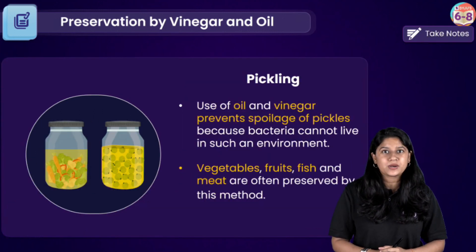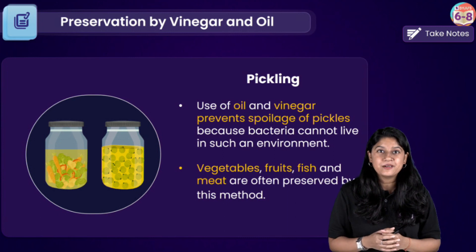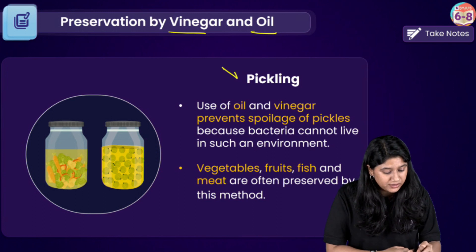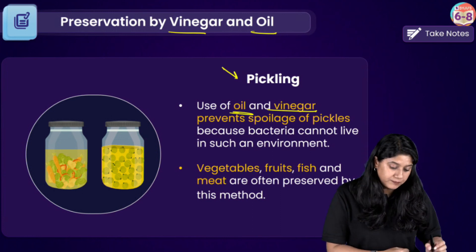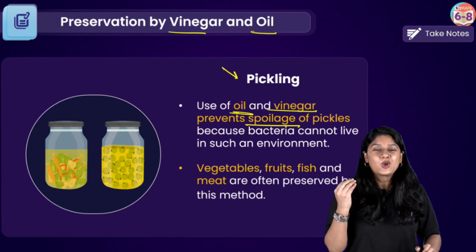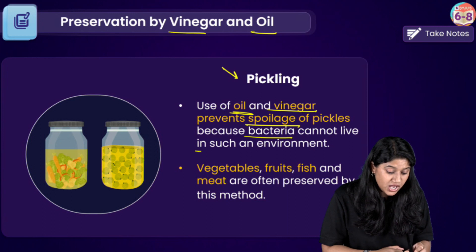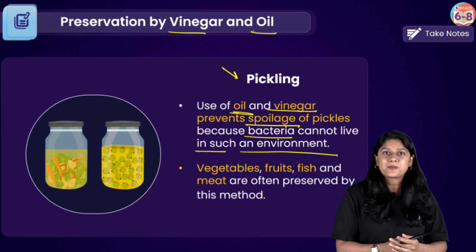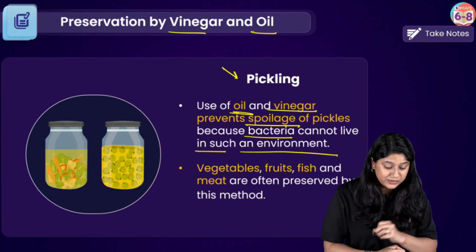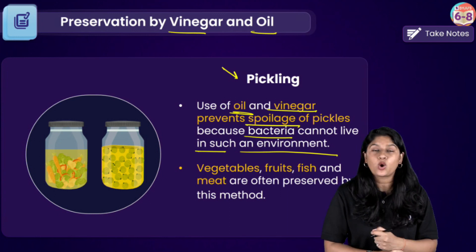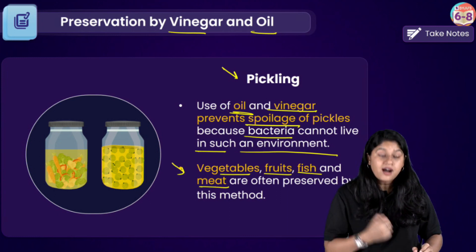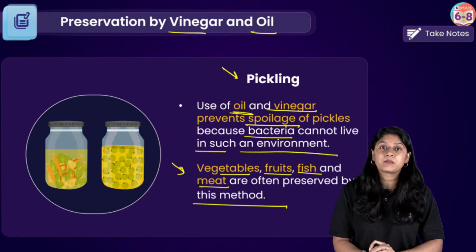Now let's talk about the last chemical method: using oil and vinegar. Of course, if you are making pickles, you will be using oil and vinegar and they will prevent the spoilage of the pickle because bacteria cannot live in such an environment. Bacteria will not be able to survive where we have oil as well as vinegar, so they inhibit the growth of bacteria. Vegetables, fruits, fish, and meat are often preserved using this particular method.